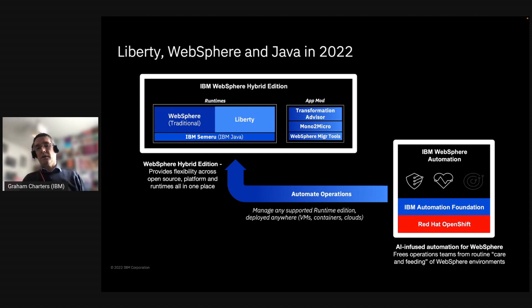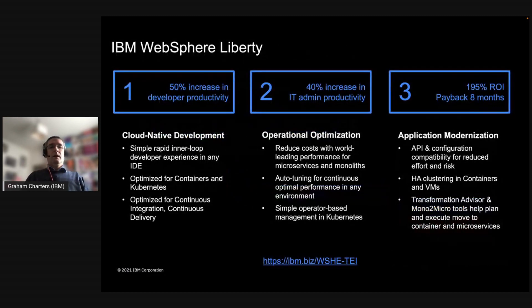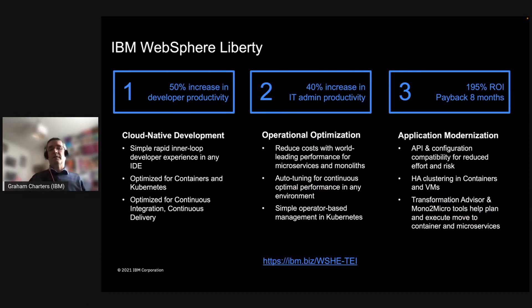We also have WebSphere Automation, which helps with things like your security posture for existing deployments — understanding what CVEs or vulnerabilities you may have, and helping you identify fixes. That's how we wrap the customer needs up into the single Hybrid Edition offering.